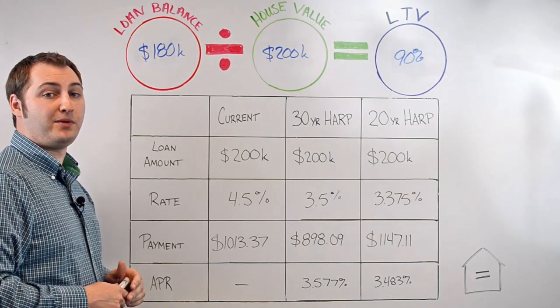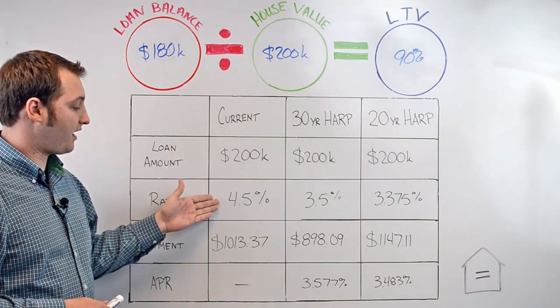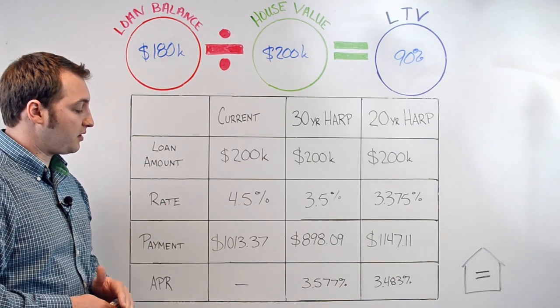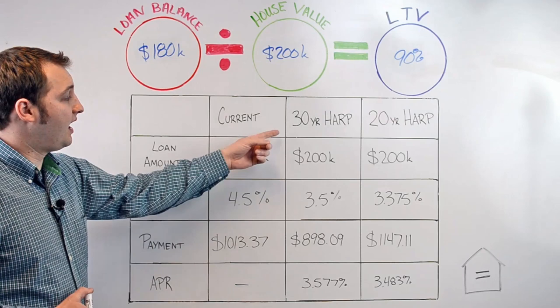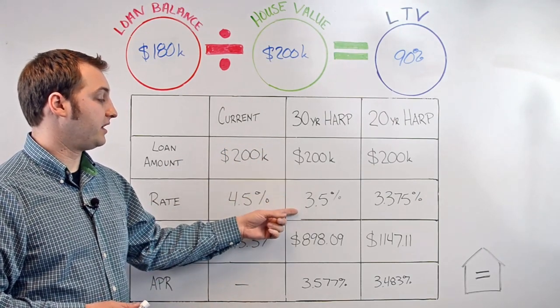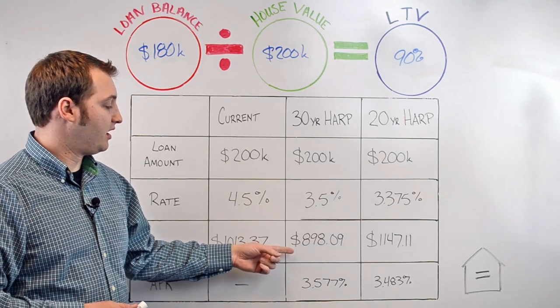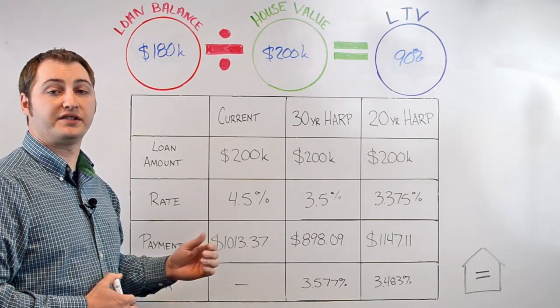Here's how HARP may be able to save you. If we compare a current loan at $200,000 at a 4.5% rate, the estimated monthly payment would be $1,013.37. On a 30-year HARP refinance at a loan amount of $200,000 with an estimated interest rate of 3.5%, we would have a payment of $898.09, over $100 savings per month.